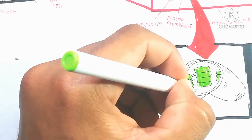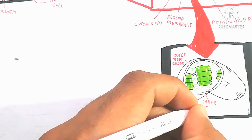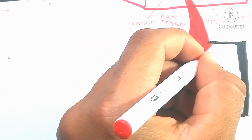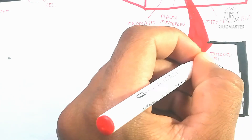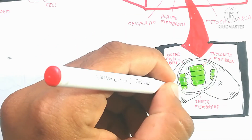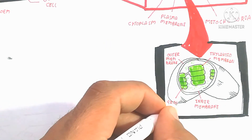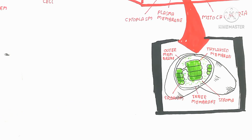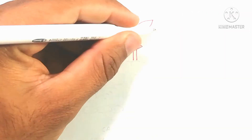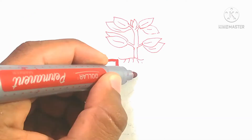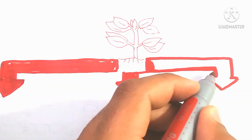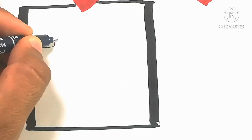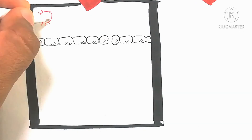Here I am drawing the chloroplast structure. It is a double-membrane organelle with an outer and inner membrane. The inside fluid-like structure is known as the stroma. Inside the stroma are thylakoids, which contain chlorophyll used for the light reactions — converting light energy into chemical energy as ATP and NADPH. The Calvin cycle occurs in the stroma.